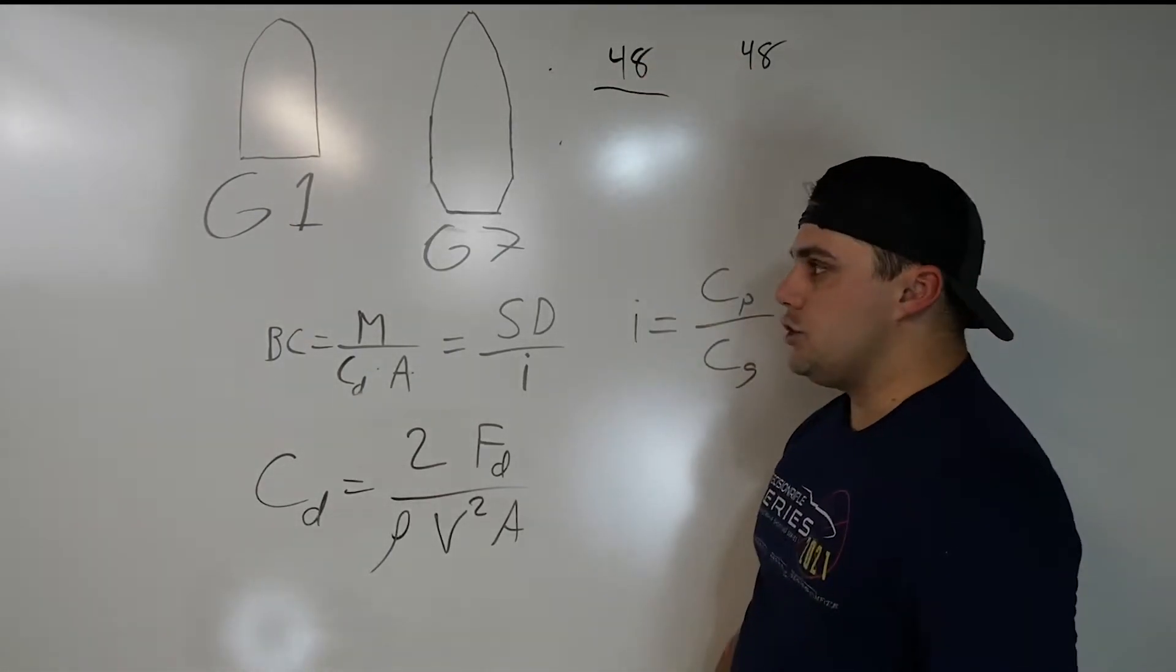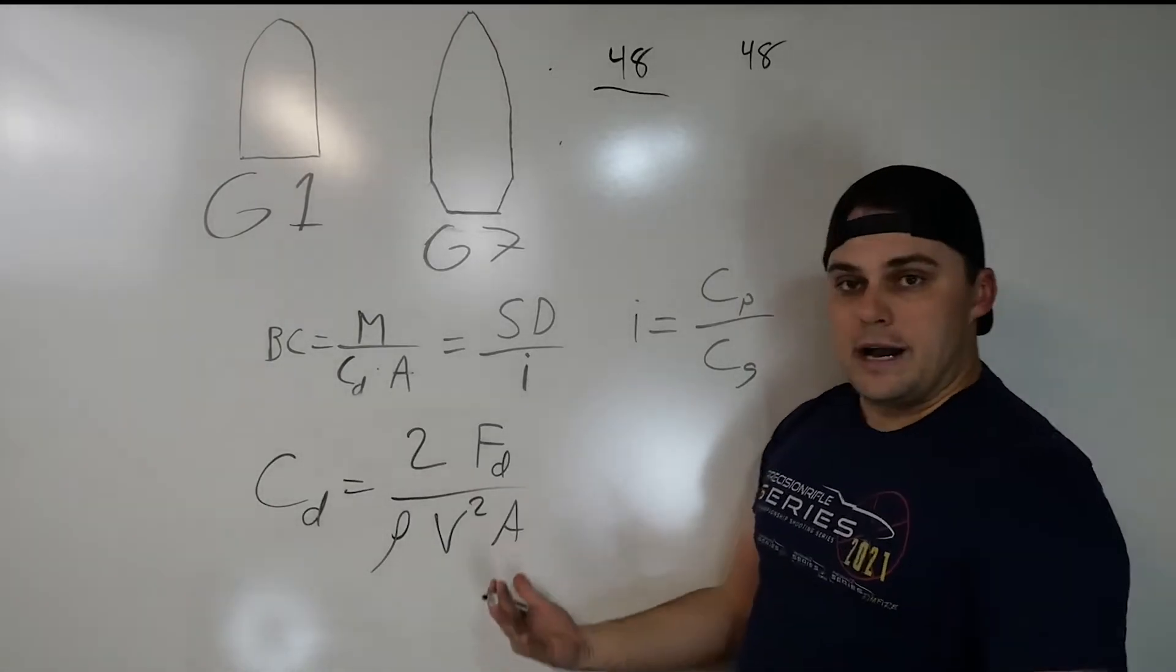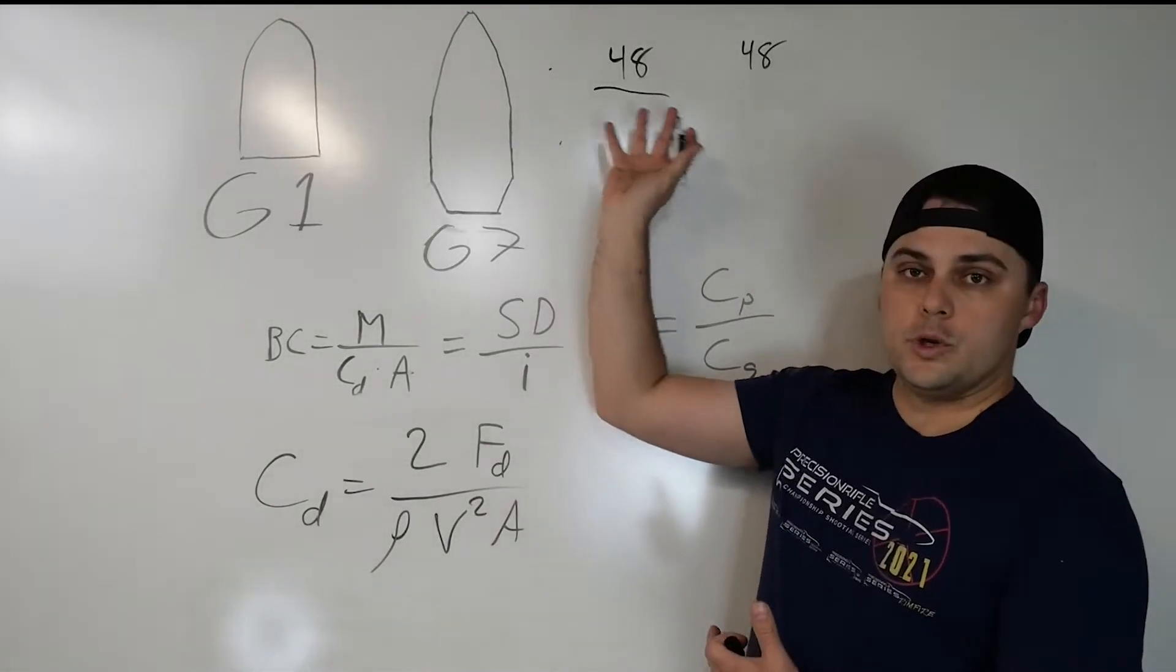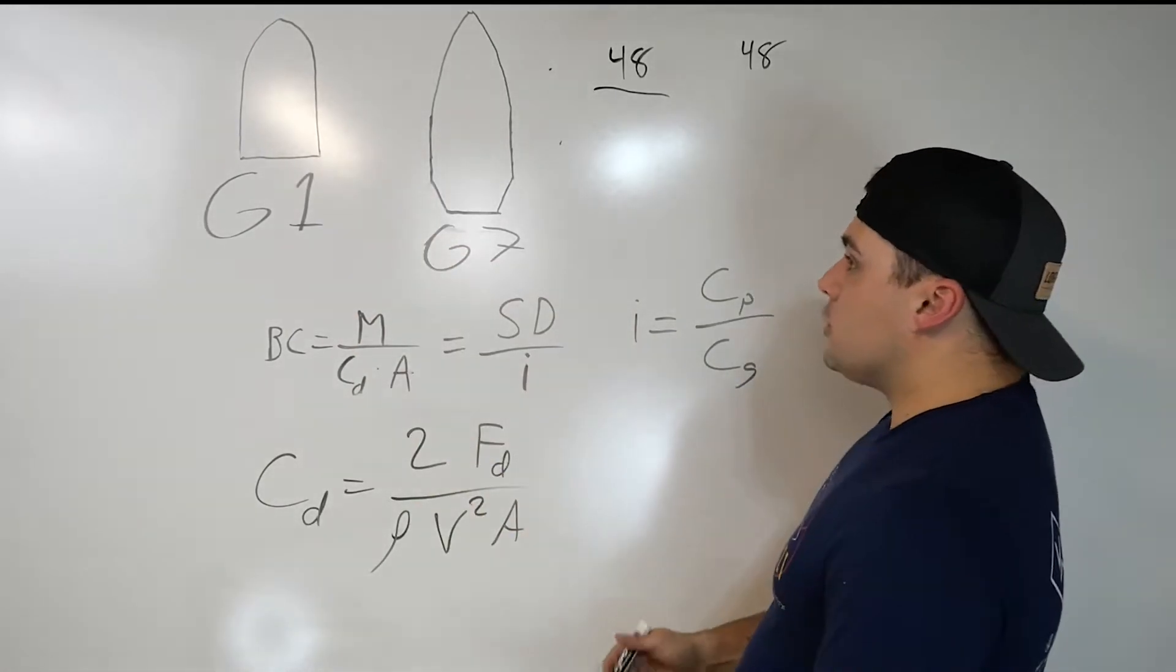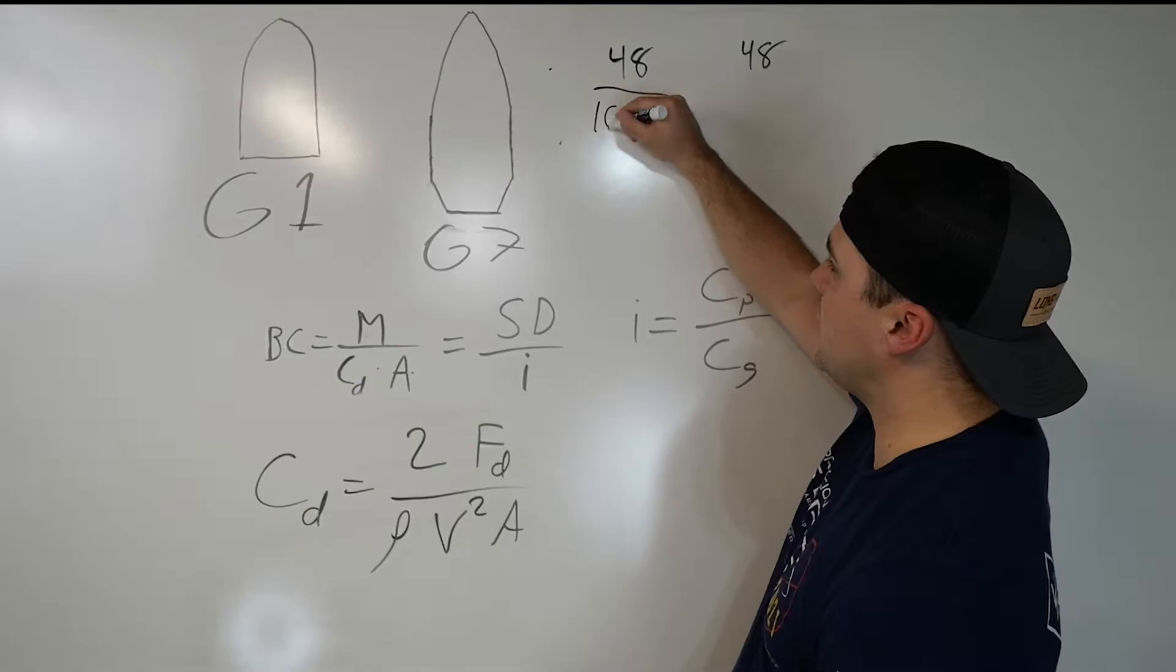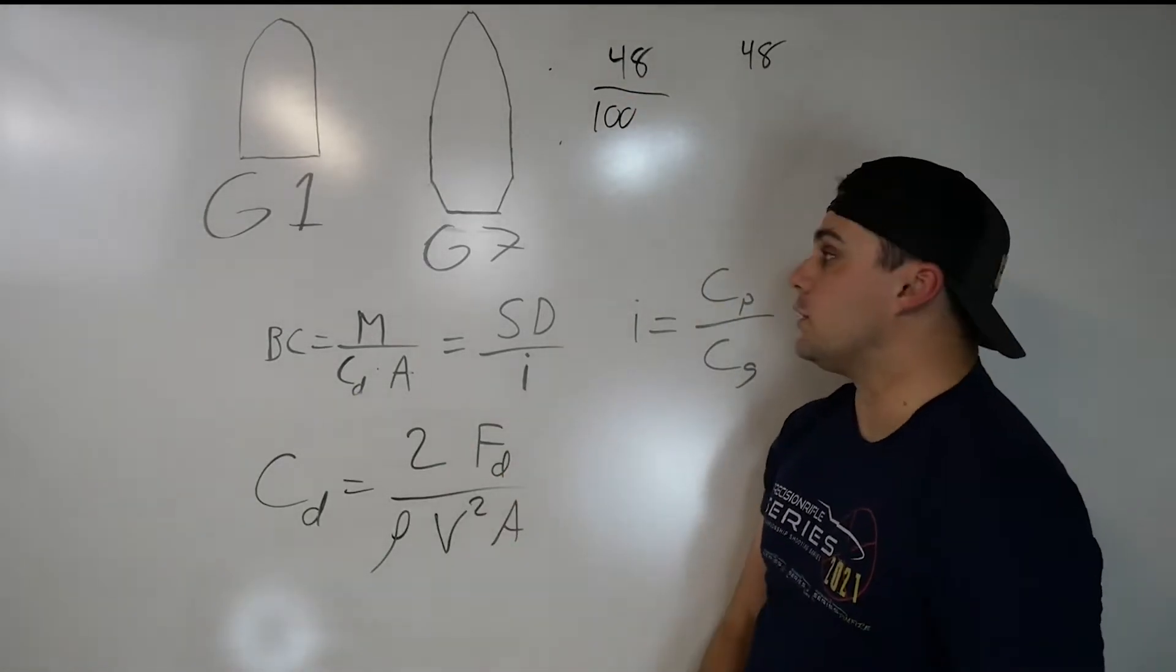Now we'll compare this to a G1 and a G7 bullet to see why they're a little bit different. So let's just say over here, G1 has a large drag factor that's going to be much bigger than the bullet we're using. We're using a long range style bullet. So the drag factor for the G1 style bullet is going to be much bigger. Let's just say that it's 100, just purely random.